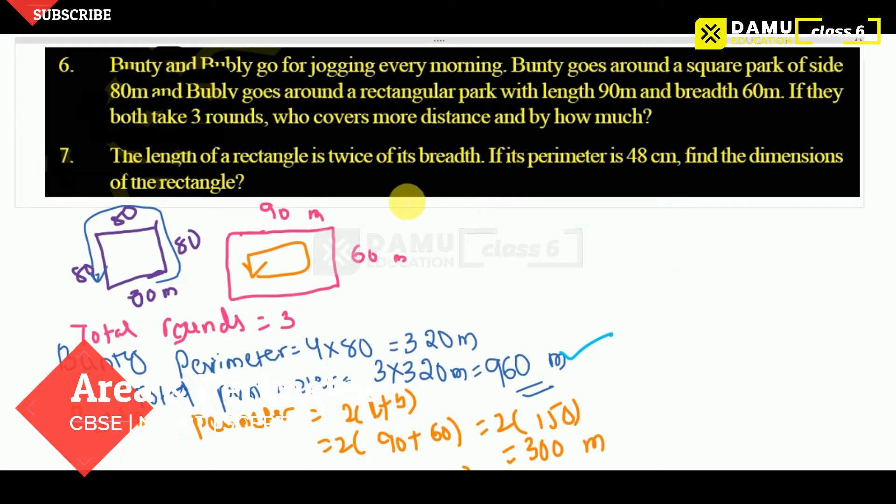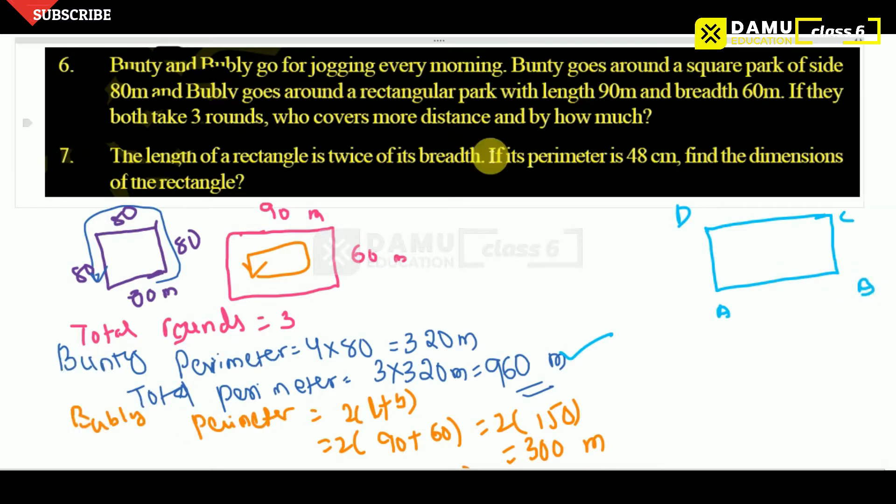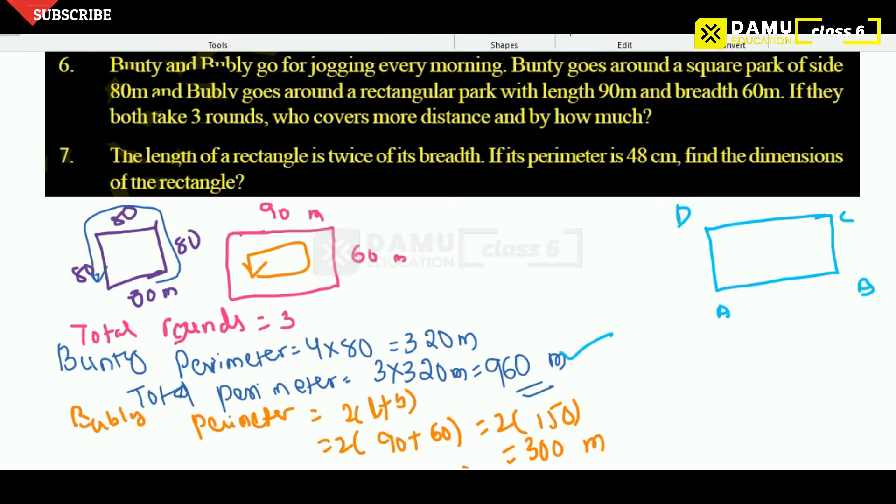The length of rectangle is twice of its breadth. If perimeter is 48, find the dimensions of the rectangle. So rectangle, this is rectangle ABCD. Let's take ABCD. So what is its length of rectangle actually? Length of rectangle, what they are given? What they are asking?